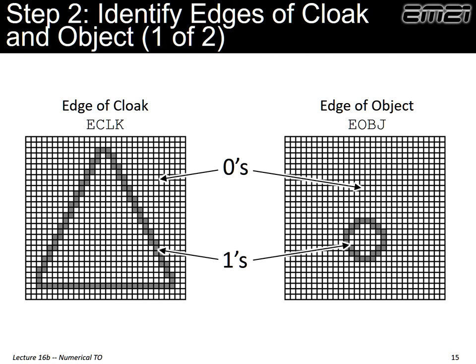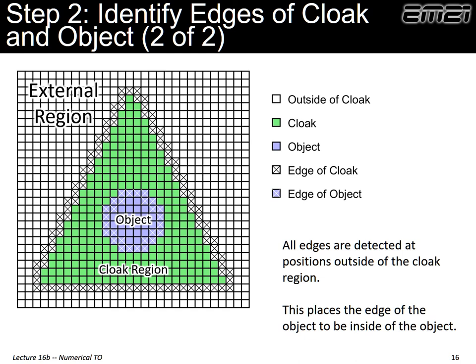We detect the edges because we'll be forcing our coordinate values at the edges using Laplace's equation. We take our cloak array and object array and do edge detection with one important trick: when we do edge detection on the cloak, that edge should fall outside of the cloak; when we do edge detection on the object, that edge should fall inside the object so it is still outside of the cloak. That way no edge points are in the cloak region, which is where we'll be solving Laplace's equation and eventually filling in permeability and permittivity.